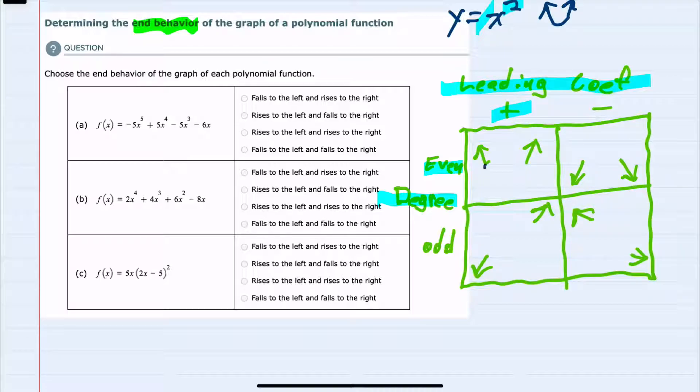That gives us this up and up, up on the left, up on the right sort of shape. So a positive coefficient and an even degree gives us that up to the left, up to the right.